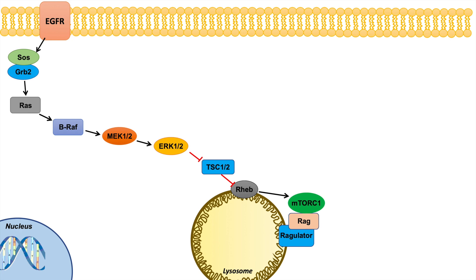ERK1 and 2 also have a role in activating RSK proteins, and RSK will also inhibit TSC1 and 2. So there are two ways in which the RAS-RAF-MEK-ERK pathway can lead to the inhibition of TSC1 and 2, which eventually leads to the activation of mTOR complex 1.